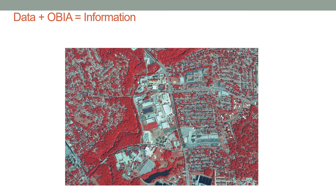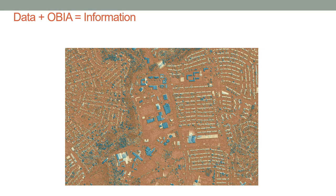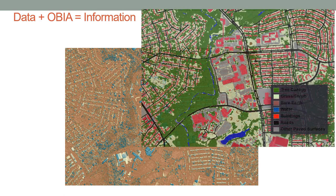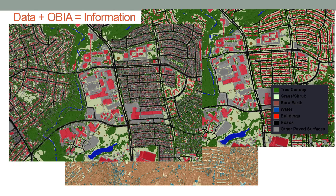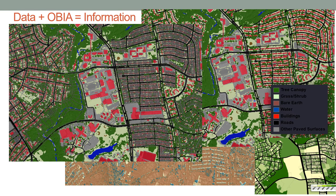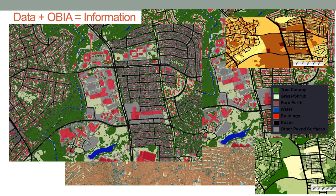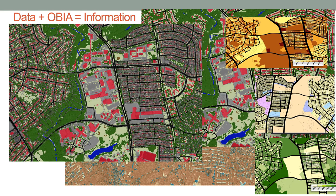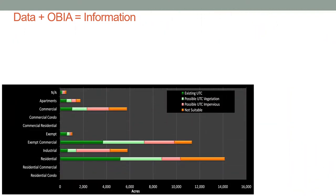Here is another slide highlighting the conversion of data to information: data plus OBIA equals information. Object-based image analysis techniques are critical to converting data to actionable information. A NAEP image was converted into a land cover map using both NAEP and LIDAR data, giving a very accurate high spatial resolution map, which was then queried using property parcels to determine tree canopy per parcel, impervious surface per parcel, and additional tree canopy potential. Jarlath O'Neill Dunn has done significant work developing these metrics.